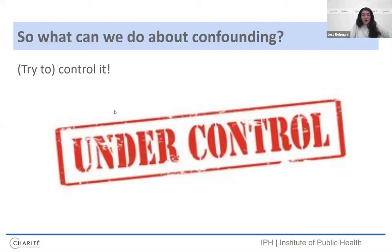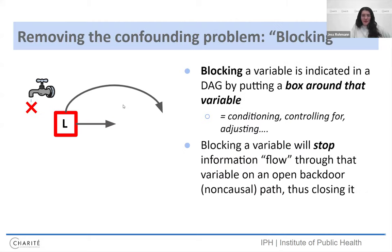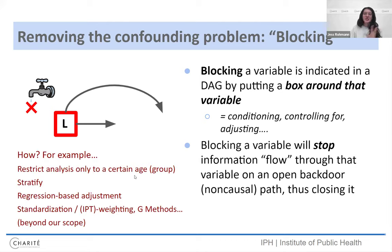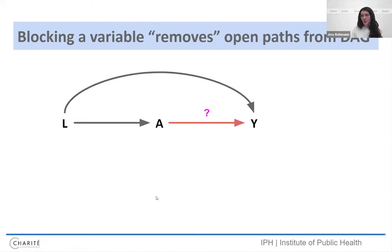And so what can we do about confounding? We can try to control it. This goes a bit outside of the scope of our talk today, but essentially what we do in the DAG is we just put a box around the thing. That's a problem. Again, DAGs are very simple. What that means in practice, you're conditioning, controlling for adjusting for that variable and blocking a variable stops the flow through that variable and closes the open backdoor path. So just some ways to do this. I'm sure you've heard of these things, maybe restricting your analysis to a certain age, for example, stratifying, regression-based adjustments, standardization, weighting. If you've heard of the propensity score, propensity score weighting. So-called G methods. Lots of options to deal with this problem. Essentially, as I mentioned, what you do is that you remove this open path from the DAG when you do this adjustment.